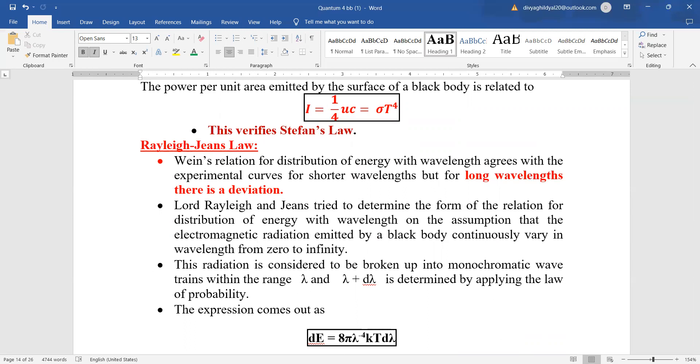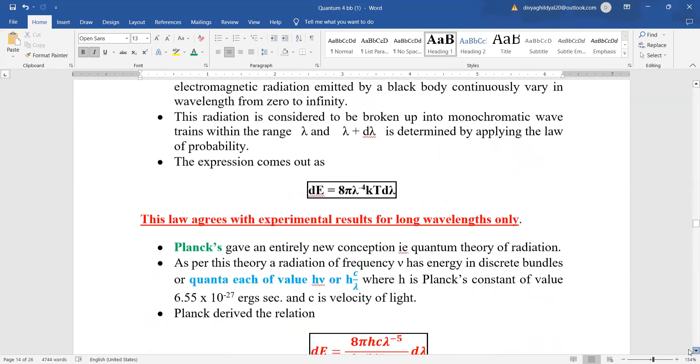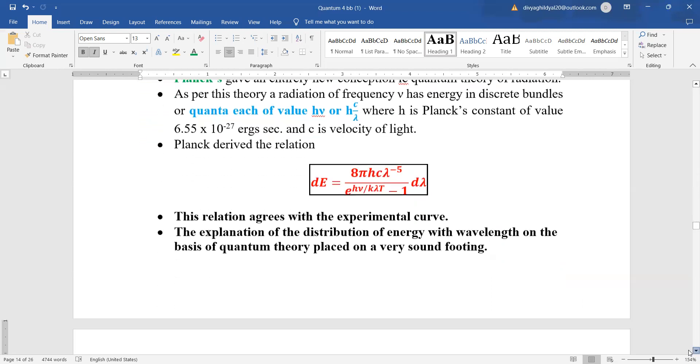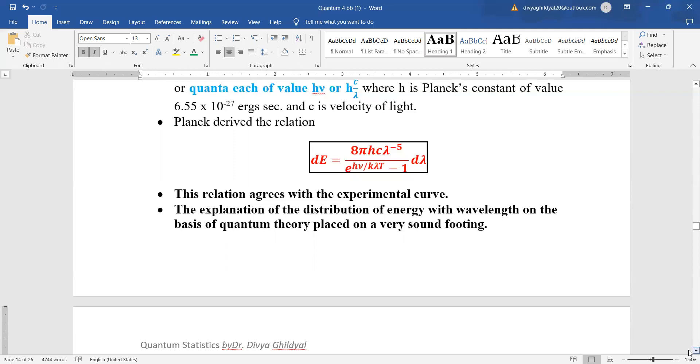So the radiation, the expression d e equal to 8 pi lambda to the power of minus 4 k t d lambda. This law agrees for longer wavelengths only. Now, Planck gave an entirely new concept of quantum theory of radiation. As per Planck the theory, a radiation of frequency mu has energy in bundles of packets and each bundle of packet has an energy equal to h mu or h c by lambda where h is Planck's constant and c is velocity of light. So Planck derived the relation d e equal to 8 pi h c lambda to the power of minus 5 upon e to the power of h mu by k t lambda minus 1.